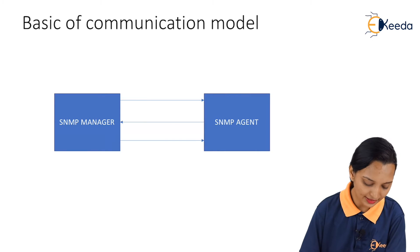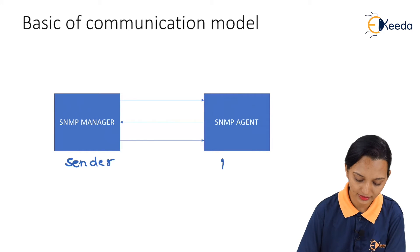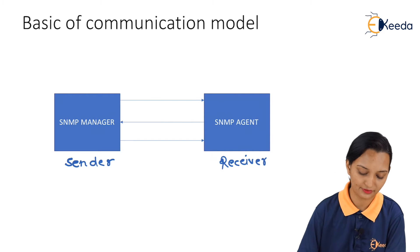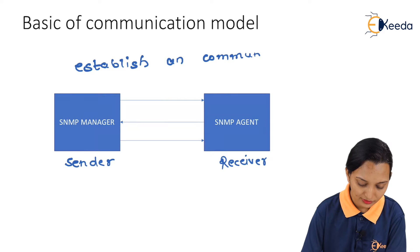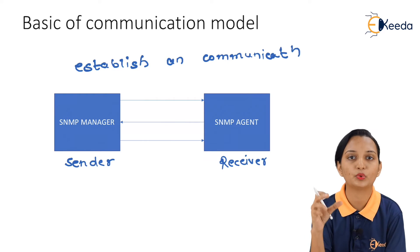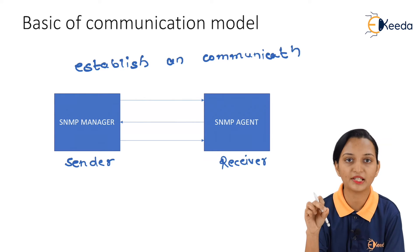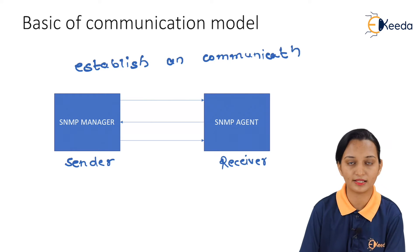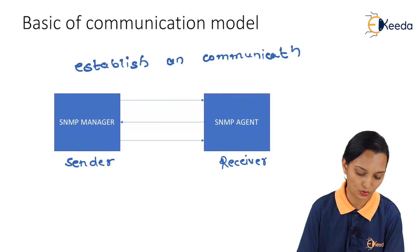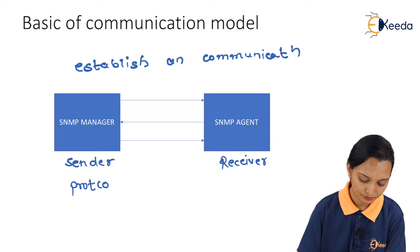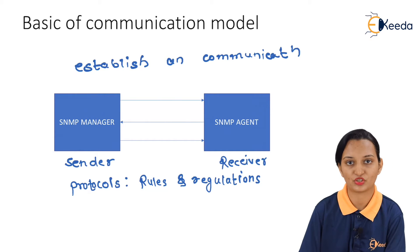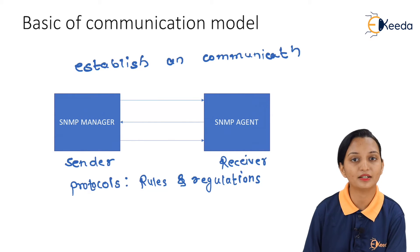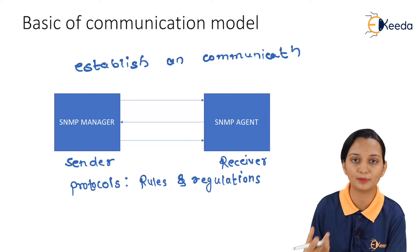In the basic model of communication, there is a sender and there is a receiver. In between sender and receiver, if we require to establish a communication, both require to follow some protocols. Protocols are nothing but rules and regulations for making successful communication. So, whenever we require to send something, there should be someone who will try to receive that particular data.